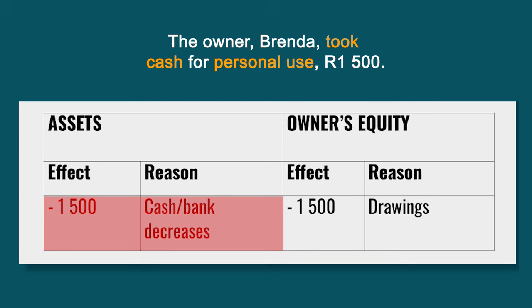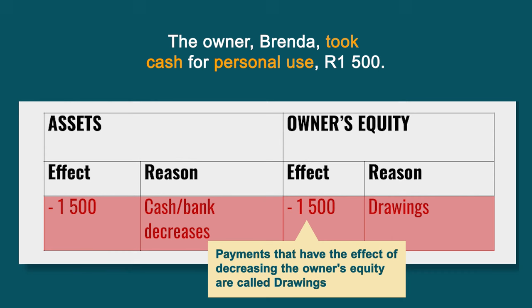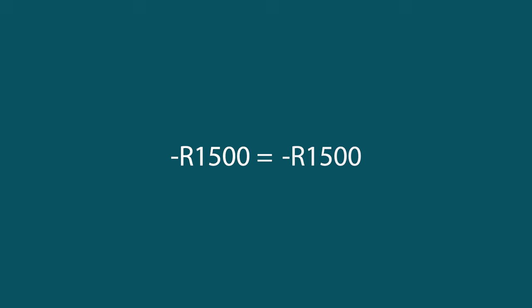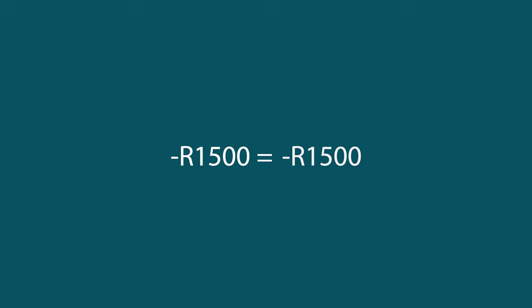No asset was obtained for the payment, so total assets decreased by R1,500. Consequently, Owner's Equity decreases by R1,500. These payments that have the effect of decreasing Owner's Equity are called drawings. Drawings are not an expense — they only decrease Owner's Equity. Minus R1,500 equals minus R1,500, so the equation is correct. This marks the end of Lesson 1 for Term 3 — we'll see you next time in Lesson 2.